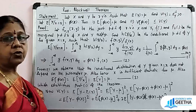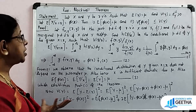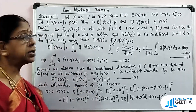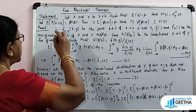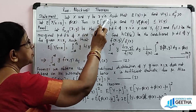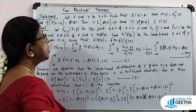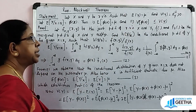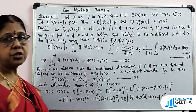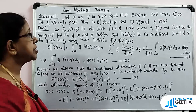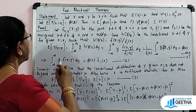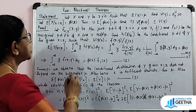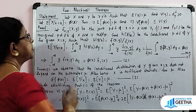Now, a very important theorem under point estimation: the Rao-Blackwell theorem. Statement: let X and Y be random variables such that E[Y] = μ and Var(Y) = σ²_Y > 0. Let E[Y | X] = π(X). Then we can prove: (1) E[π(X)] = μ, and (2) Var(π(X)) ≤ Var(Y).